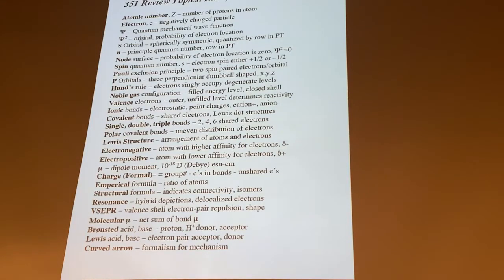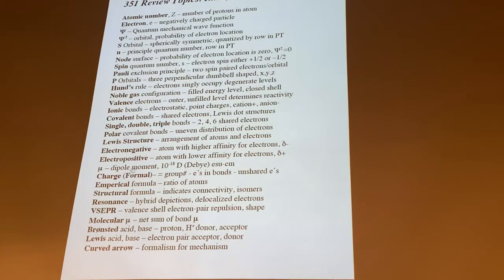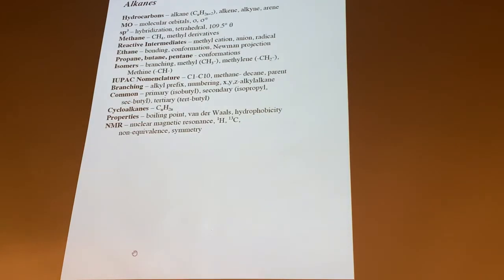What we've got there is all the concepts from 351. The important things: Lewis dot structures, covalent bonds, valence electrons — all these topics from general chemistry. And formal charge, being able to see where we're at in resonance structures and VSEPR to know what the geometry of the molecule is. And of course curved arrow formalism for the mechanisms. Then I break it out into topics from 351.